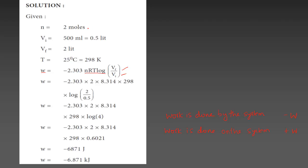We have 2 moles. The initial volume is 500 ml, that is 0.5 liters — since 1000 ml is 1 liter, 500 ml is 0.5 liters. Vf is equal to 2 liters. Temperature is 25 degrees Celsius, which is 25 plus 273 equals 298 Kelvin. The gas constant R is 8.314. So 2 divided by 0.5 gives log value of 0.6021.